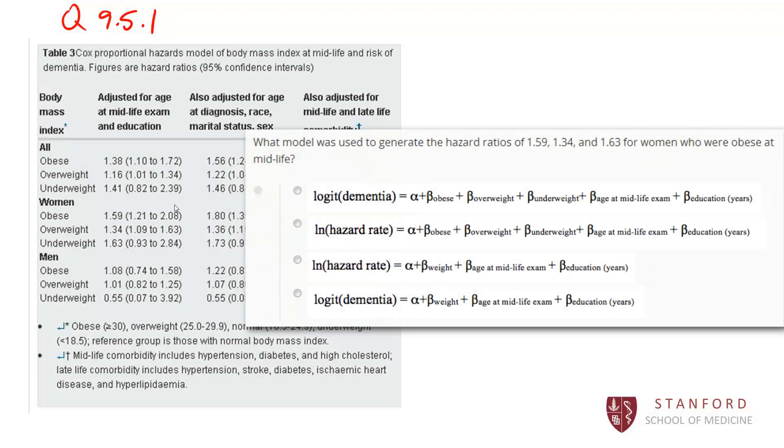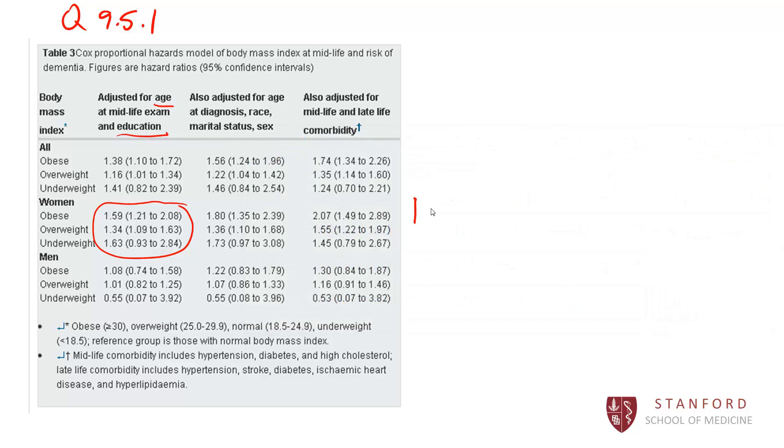So I'm asking you about how these hazard ratios were calculated here. These are going to be dummy coded. So the obese, overweight, underweight is a four level categorical variable. They're being compared to normal weight women. So we have a four level categorical variable that we're going to have to dummy code. If you read carefully, it tells you that we've been, that these have been adjusted for age and education if you read the top of that column.